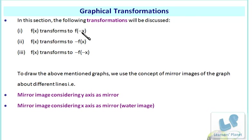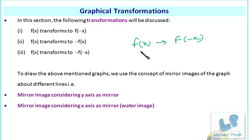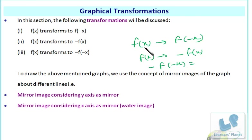When we convert f(x) to f(-x), we get the exact mirror image — when x is converted to -x. When f(x) is converted to -f(x), you have to see the water image. In the case of -f(-x), you have to see both water as well as mirror image, because x is being converted to -x and additionally there is a minus of f(x), so two transformations are involved.